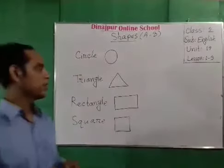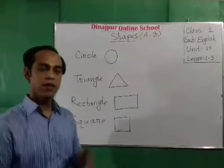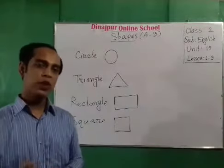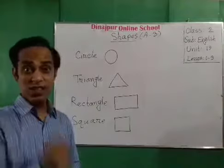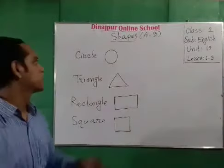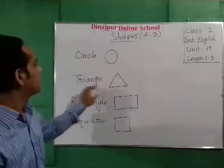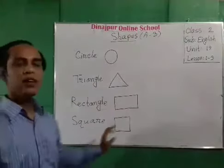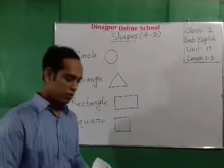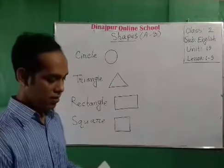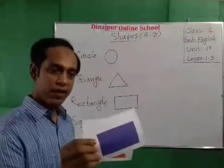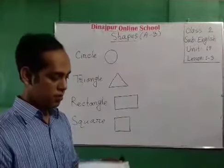Okay my students, we have already learned these shapes in Activity A and Activity 2. Today we are going to start our Activity 3. We have already known the names of these shapes: circle, triangle, rectangle, and square. You also look at these pictures — triangle, square, rectangle, and square.